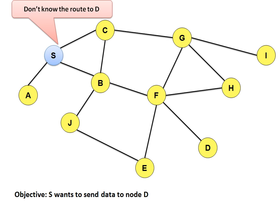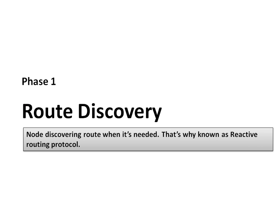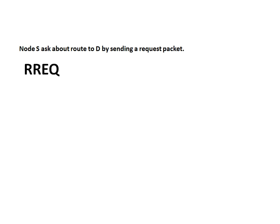We are considering a network where node S represents the source node, node D represents the destination node, and the other nodes work as intermediate nodes. Our objective is that node S wants to send data to node D. Initially, S does not have any information about where node D exists in the network, so the first phase it will go through is route discovery — it will search and discover a route to reach node D.